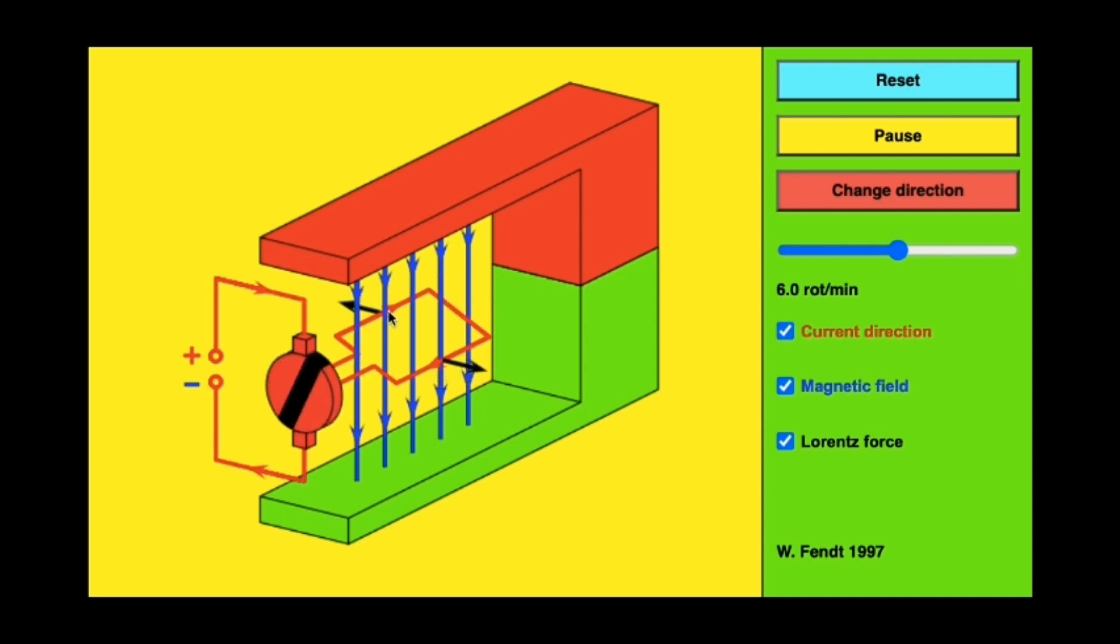We can see that by following one side of the coil as it rotates around within this external magnetic field, every 180 degrees the current in that coil changes direction. This is a result of the split ring which converts direct current in the external circuit into alternating current in the internal circuit.